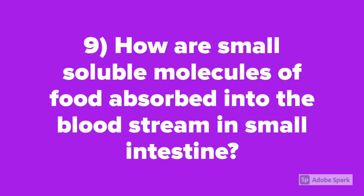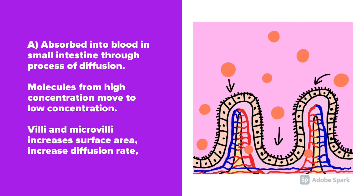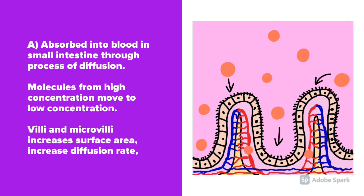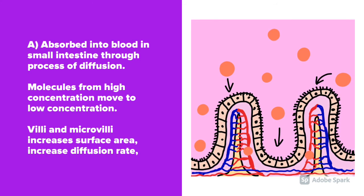Question number 9: How are small soluble molecules of food absorbed into the bloodstream inside the small intestine? Food is absorbed into the blood in the small intestine through the process of diffusion, where molecules move from an area of high concentration to low concentration. The villi and microvilli increase the surface area, thereby increasing the diffusion rate.